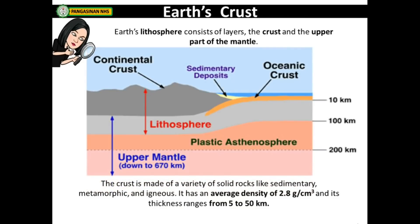Earth's lithosphere consists of layers: the crust and the upper part of the mantle. The crust is made of a variety of solid rocks like sedimentary, metamorphic, and igneous. It has an average density of 2.8 grams per cubic centimeter, and its thickness ranges from 5 to 50 kilometers.